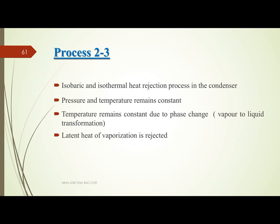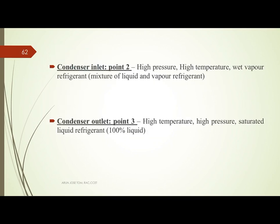Process 2 to 3 is an isobaric and isothermal phase change — temperature remains constant due to phase change. The latent heat of vaporization is rejected from the refrigerant. Point 2 is the inlet of the condenser, where the refrigerant condition is high pressure, high temperature wet vapor — a mixture of liquid and vapor. The exit condition at point 3 is high temperature, high pressure, saturated liquid — that is 100% liquid.